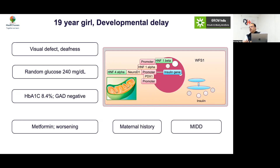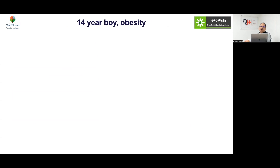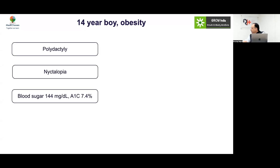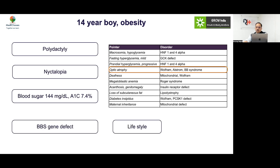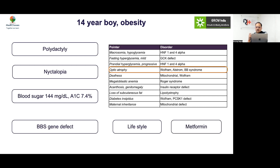Case: A 14-year-old boy with obesity, polydactyly, nyctalopia, blood sugar 144, HbA1c 7.4% — think of Bardet-Biedl syndrome. Always look for extra fingers, as classical manifestations may be missed — even checking the feet is important. Lifestyle measures and metformin are required in this scenario.